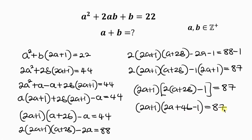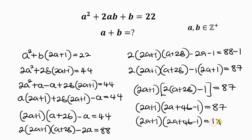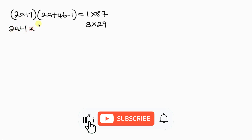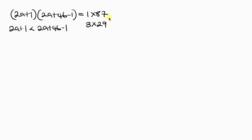Our next step is to write down the factors of 87: (2a plus 1) times (2a plus 4b minus 1) equals 87, which is the same as 1 times 87, or 3 times 29. We should know that (2a plus 1) is less than (2a plus 4b minus 1). So this gives us Case 1 and Case 2.